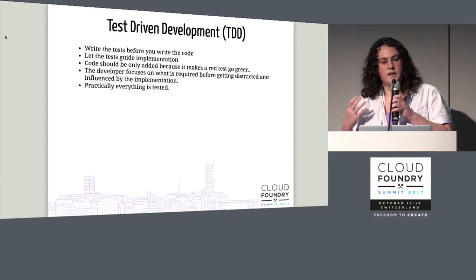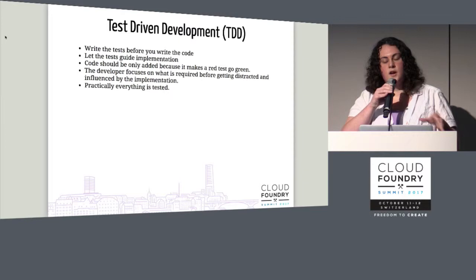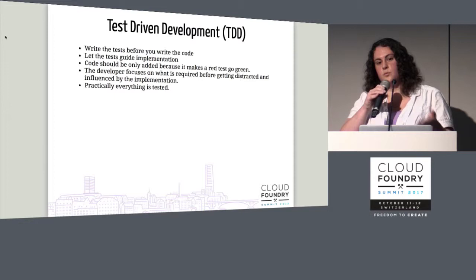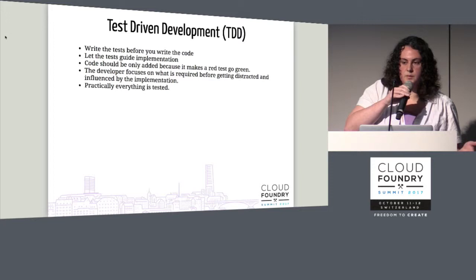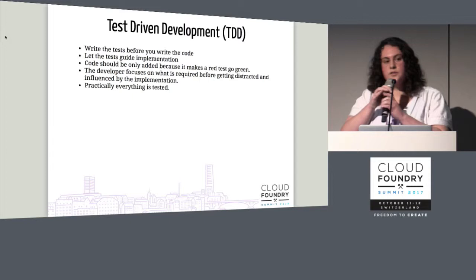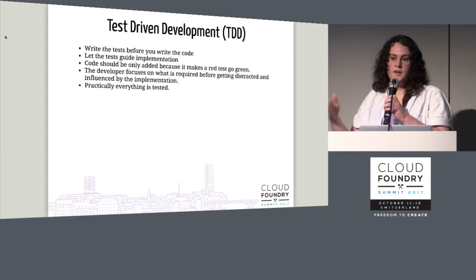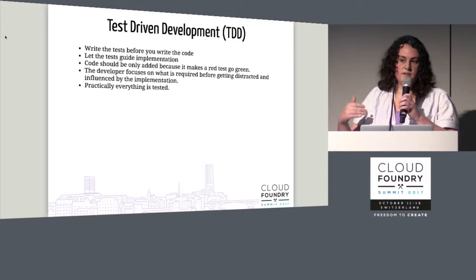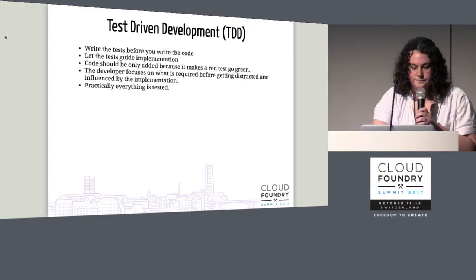One of our other core principles is test-driven development, or TDD. That means when you first sit down to write a story, instead of just coding the solution up, you first write a failing test. The idea is that test will go green once you've satisfied what that story requires. By doing this before you write the implementation, you're not letting the implementation bias what you later test. It keeps you focused, keeps you writing just the code you need, and keeps you from over-engineering things or writing code that isn't tested.